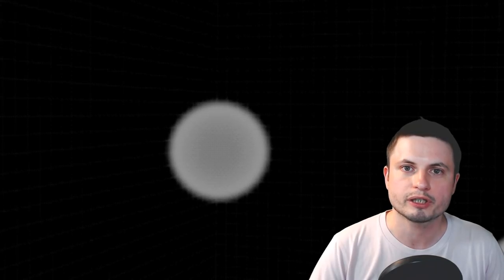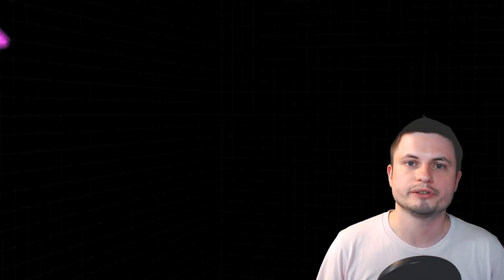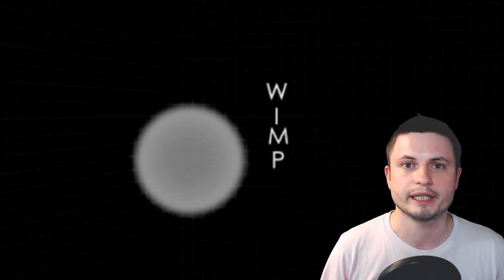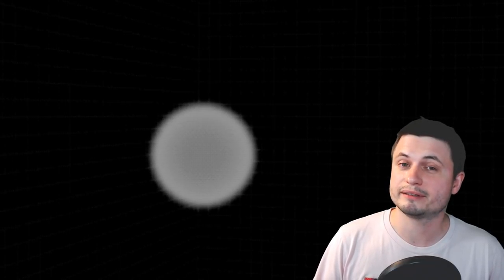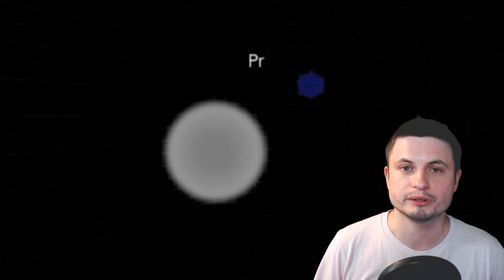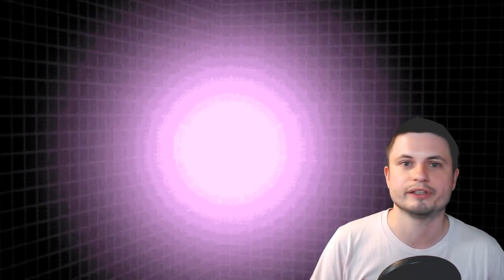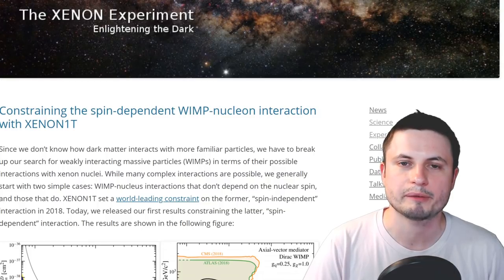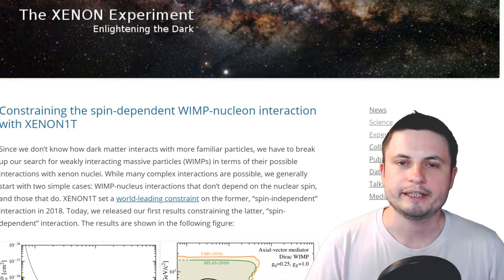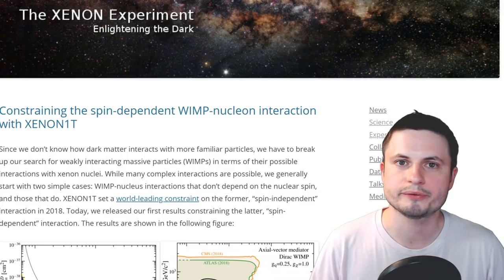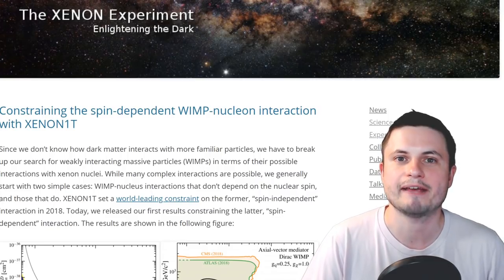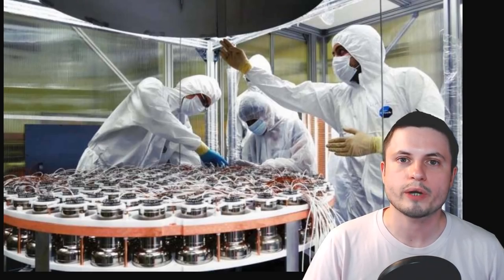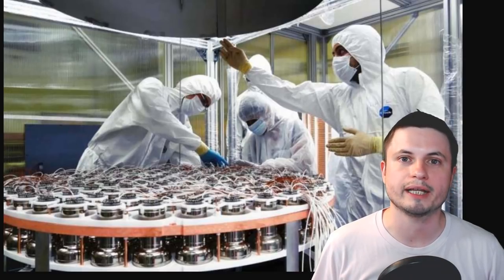And today we're going to briefly talk about one of such experiments, because the scientists behind this experiment that's conducted in Italy, have discovered something maybe just as incredible and as fascinating as these things right here. And this joint experiment known as the Xenon experiment conducted in Italy, is by a team of over 160 scientists from US, Europe, Middle East, basically everywhere, working together trying to essentially find those WIMPs.